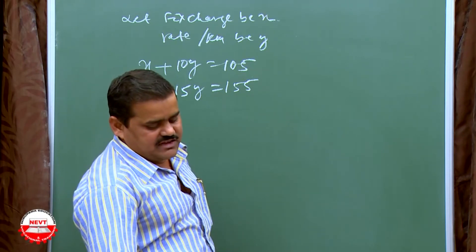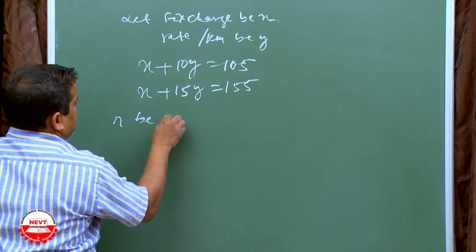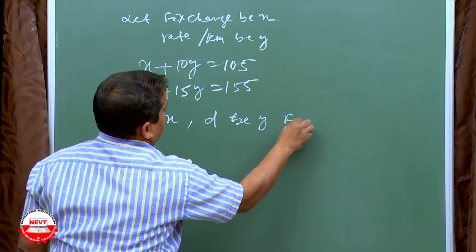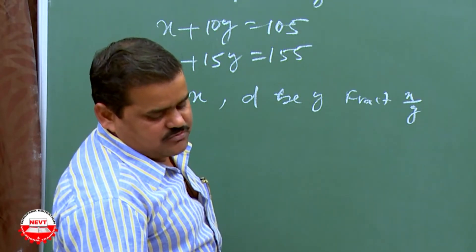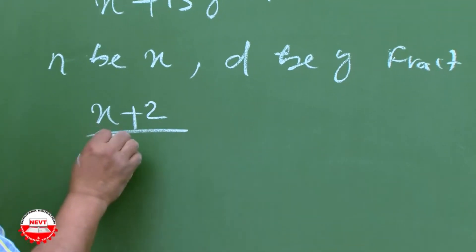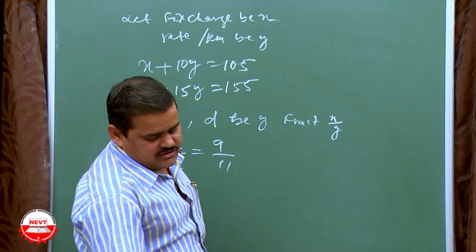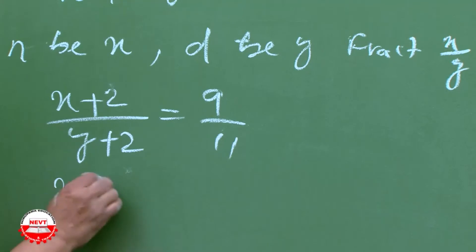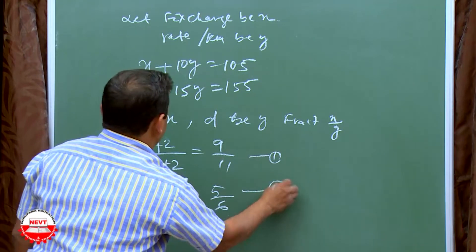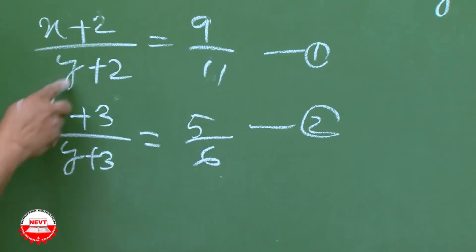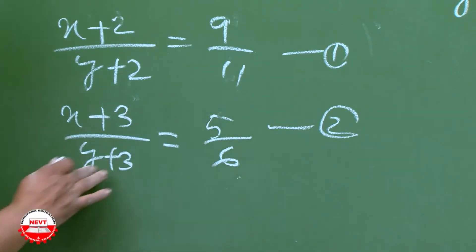The fifth part: a fraction becomes 9 by 11 if 2 is added to both numerator and denominator. Let the numerator be X and the denominator be Y, so the fraction is X by Y. Then (X plus 2) by (Y plus 2) equals 9 by 11 (equation 1). Also, (X plus 3) by (Y plus 3) equals 5 by 6 (equation 2). Cross-multiplying equation 1 gives 11X plus 22 equals 9Y plus 18. Make both equations and solve.